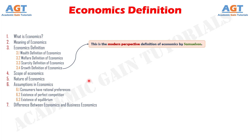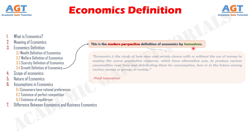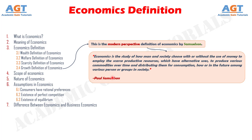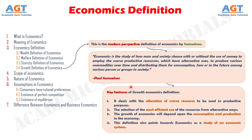Finally we have the growth definition of economics. This is the modern perspective definition by Samuelson, who provided the growth-oriented definition. According to Paul Samuelson, economics is the study of how man and society choose, with or without the use of money, to employ scarce productive resources which have alternative uses, to produce various commodities over time and distributing them for consumption now or in the future among various persons or groups in society. The key features are: it deals with allocation of scarce resources for productive purposes, selection of the most efficient use from alternative ways, growth of economies depends on consumption and production, and it points towards economics as a study of an economic system.